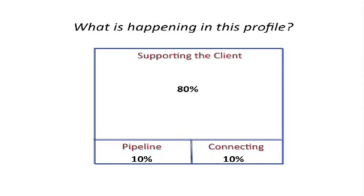The next diagram is typical of the long-established salesperson or relationship manager. You'll see very little in connecting, very little in pipeline, and an enormous amount of time — 80% — spent supporting the client. What's the danger? Nearly all of us have big clients, one or two who might be 20% of our business. If for some strange reason we lost that client, how long is it going to take to replace that 20%? This person is not prepared for that, and there's a huge danger they will run out of clients. It can take six months to a year to rebuild that whole profile.